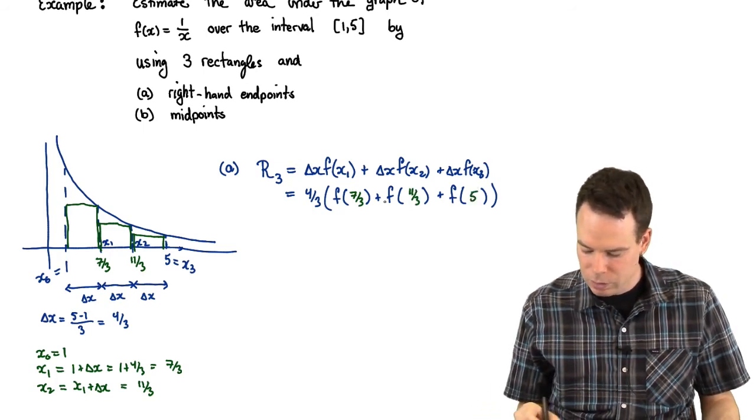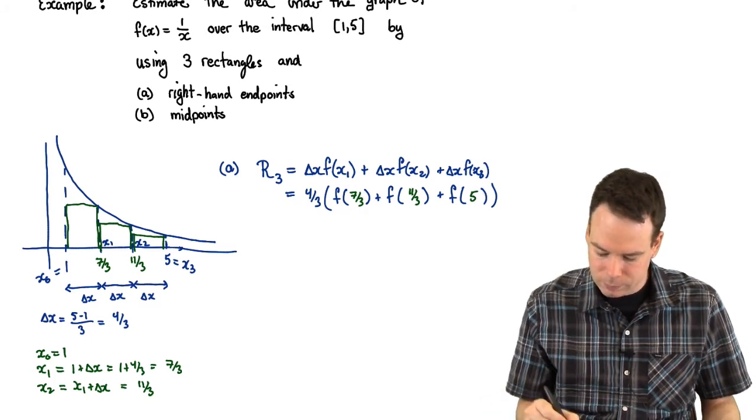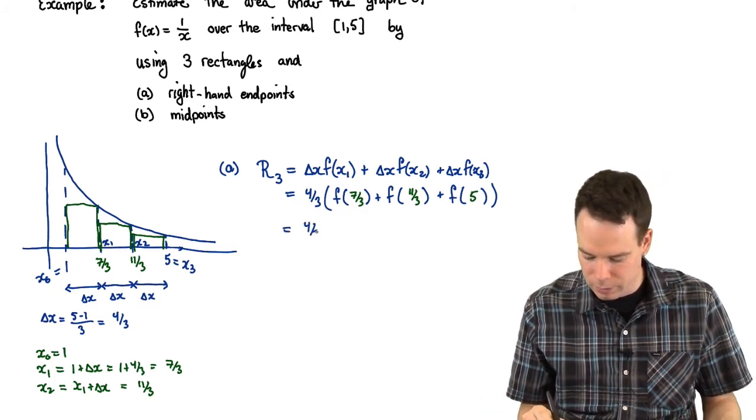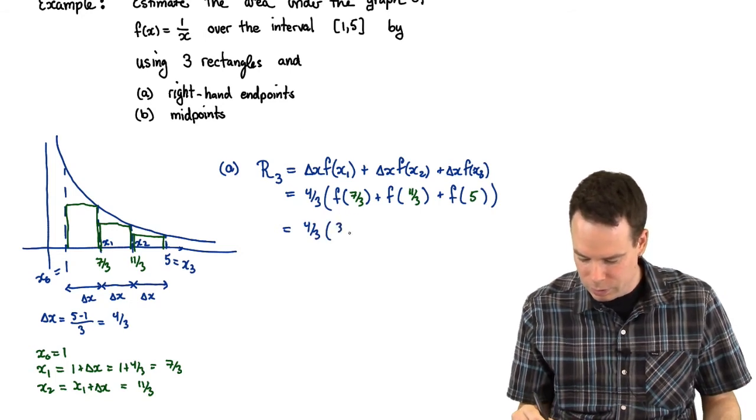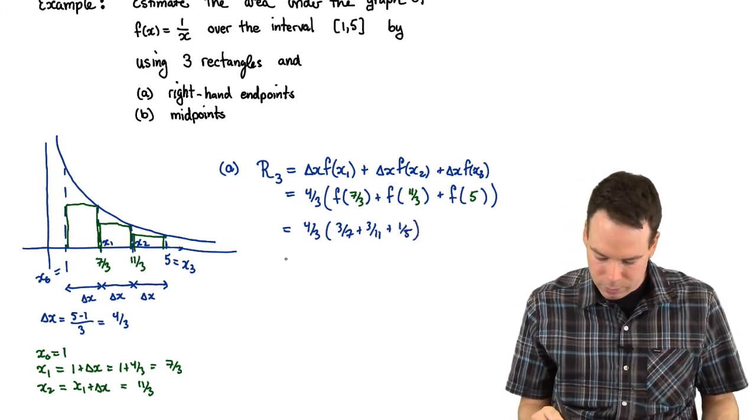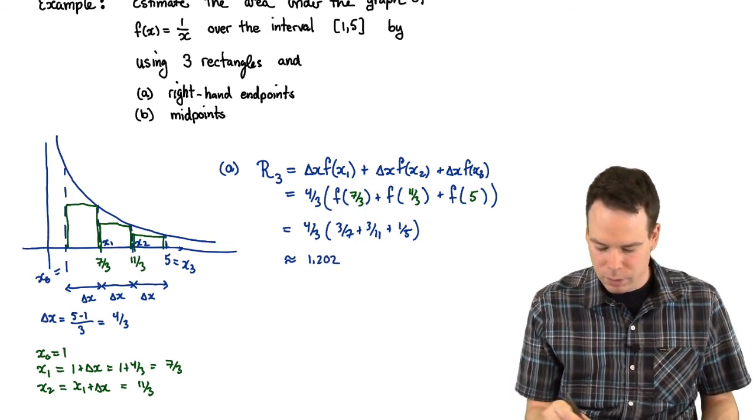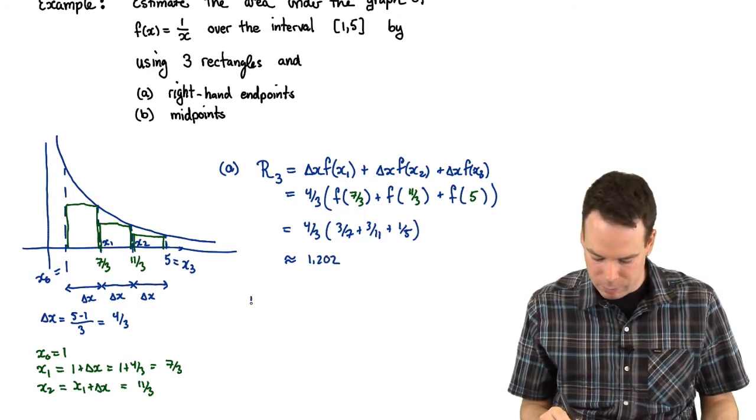The function values at each of those x values are the heights of the corresponding rectangles. So now we can just add these values up. That's f. F is the reciprocal function, so that's 3 sevenths plus 3 elevenths plus 1 fifth. Adding all those up, we get that this is approximately 1.202. So there's our right-hand Riemann sum.